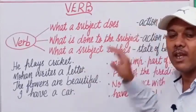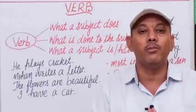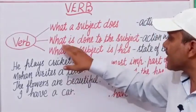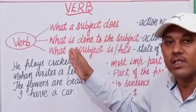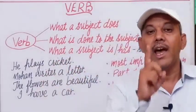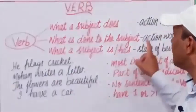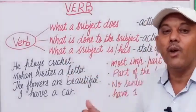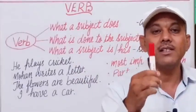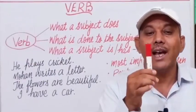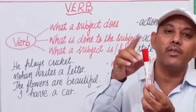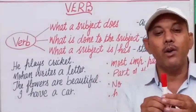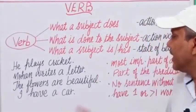Not only action words, but these action words can also be found in passive form. If something is done to the subject, or an action is done to the subject, an action word is found in its passive form — but this is also an action word. Thirdly, what a subject is and what a subject has: for example, 'This is a pen.' The word 'is' tells us about the state of being of the subject.